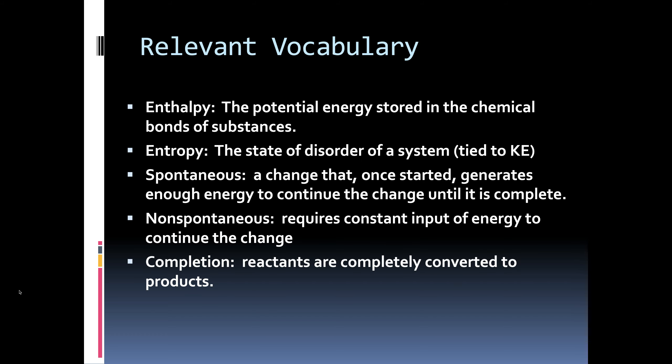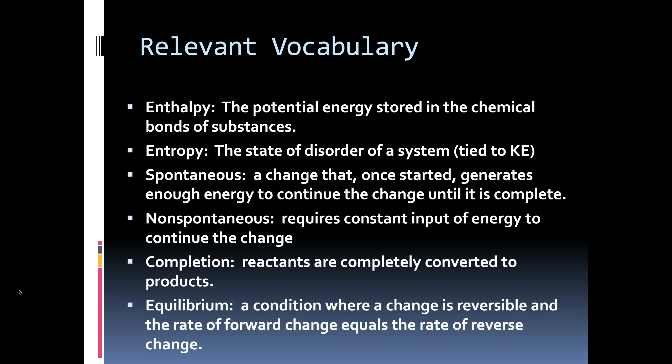Completion means that you completely convert your reactants to products. In other words, 100% of your reactants are used up and they turn into products. It's like you used up all your pancake batter and you made pancakes with them. There's no more pancake batter left. It's all pancakes. And equilibrium is a condition where a change is reversible and the rate of a forward change is equal to the rate of a reverse change. So like being on a treadmill, you walk forward at the same speed the treadmill walks backwards, you are on an equilibrium system.